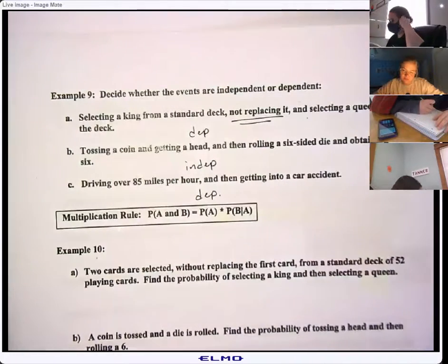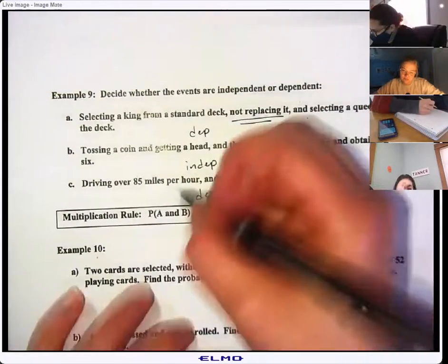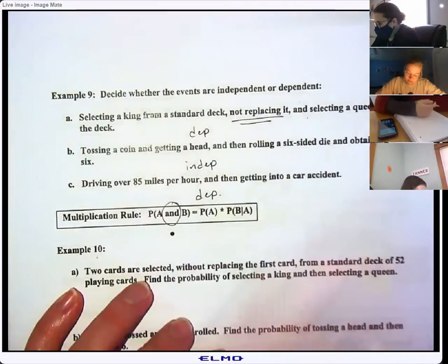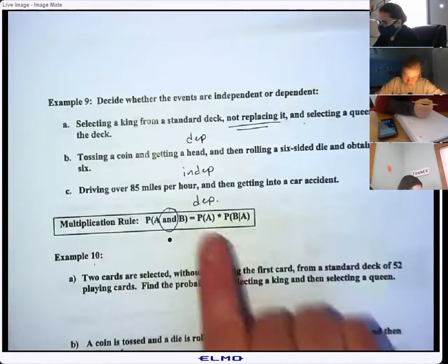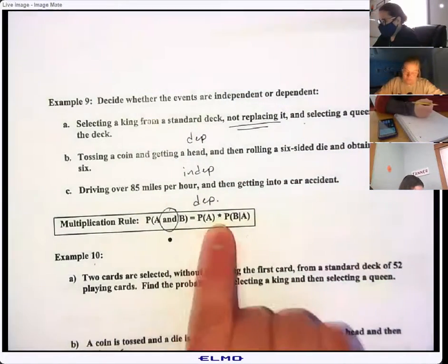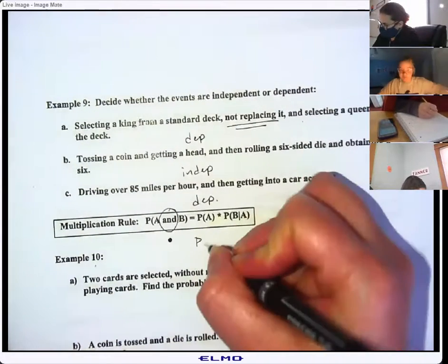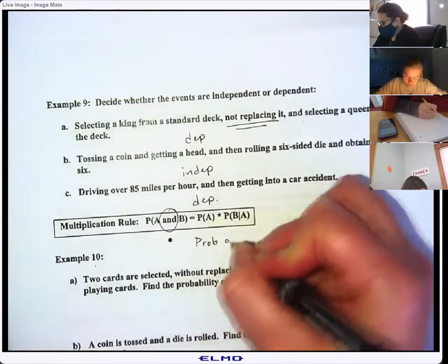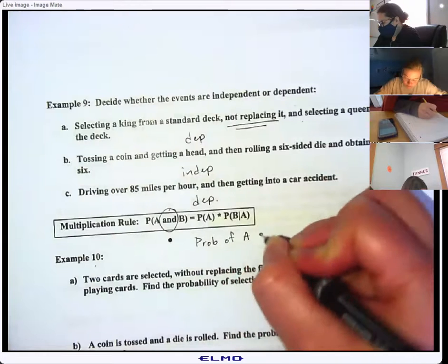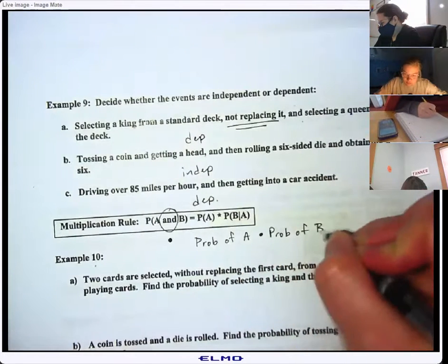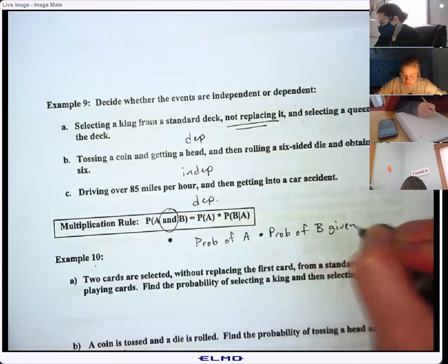All right, so this is the multiplication rule, the and rule, and it means that you multiply the probabilities. So this is the probability of A times the probability of B, given that A happened. Let's do it, Daniel.